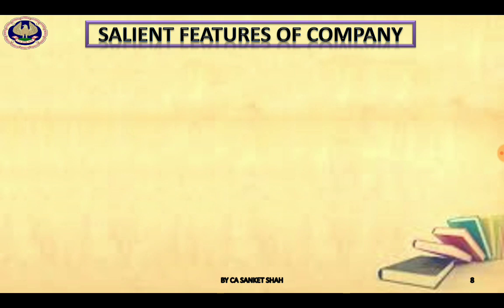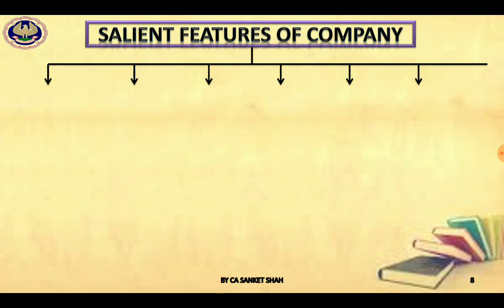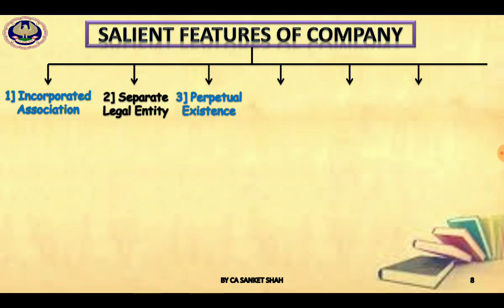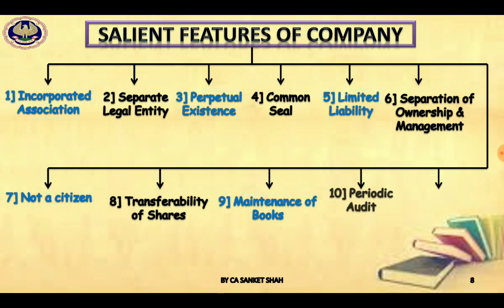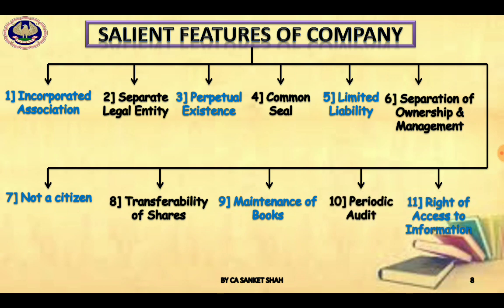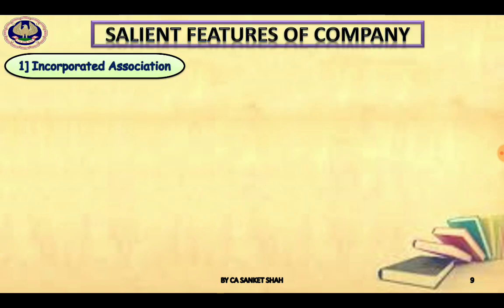Salient features — there are total 11 salient features. We will discuss them one by one: incorporated association, separate legal entity, perpetual existence, common seal, limited liability, separation of ownership from management, not a citizen, transferability of shares, maintenance of books, periodic audit, and right of access to information. First: incorporated association — a company cannot come into existence without incorporation; you have to register it. A company has to be registered with the ROC.